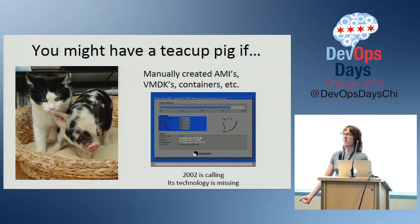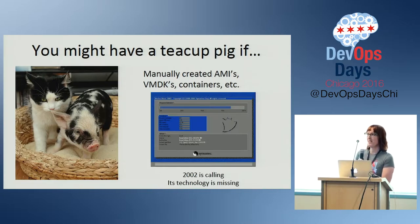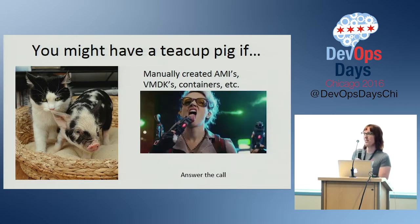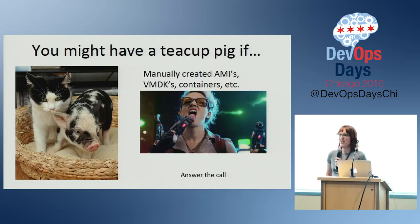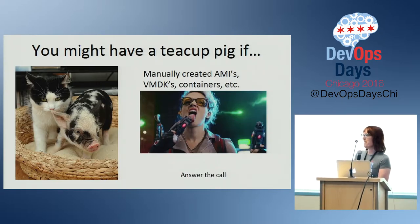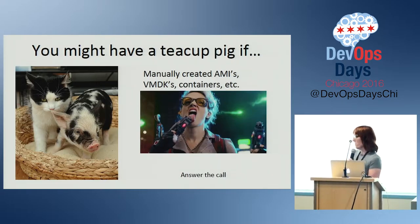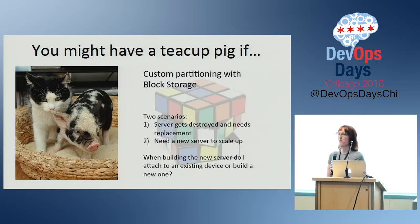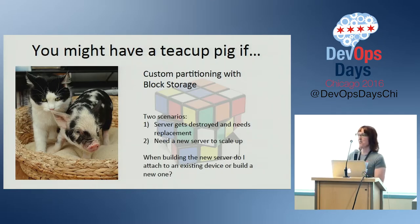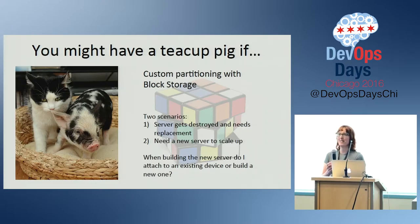If you spend a lot of time with the console or the control panel, no matter how well you know it, you might be dealing with teacup pigs. You're creating a silo — we don't do that in DevOps — and you're also creating the possibility for human error. Everybody loves to create images; they're absolutely necessary, but if you're doing it manually, you're introducing the possibility for error and another silo. We need to absolutely automate this process.